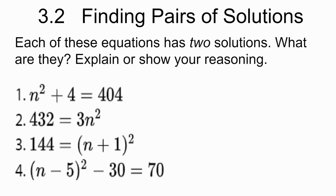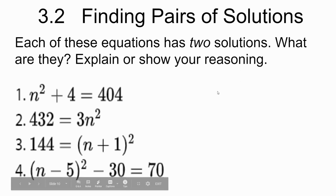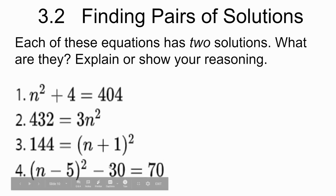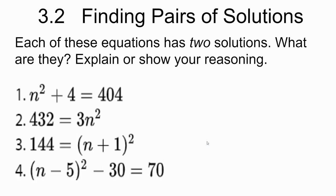Alright, so 3.2 — finding pairs of solutions. Each of these equations has two solutions. What are they? Explain or show your reasoning. There are four different equations here. We're only going to look at two together, and the other two are going to be part of your discussion, so you're going to solve all four. I want you to pause your video, try these on your own. You've got some great instinctive skills you need to use. Hit pause, and then we'll go over them.